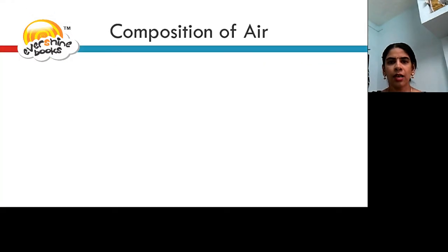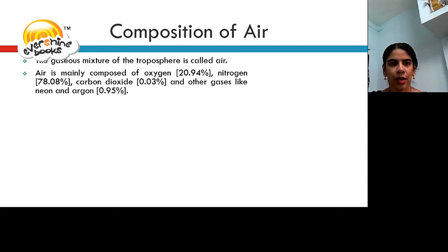Let us learn the composition of air or atmosphere. The gaseous mixture of the troposphere is called air. Air is mainly composed of oxygen 20.94%, nitrogen 78.08%, carbon dioxide 0.03% and other gases like neon and argon 0.95%. The diagram shows you the pie chart of composition of air.